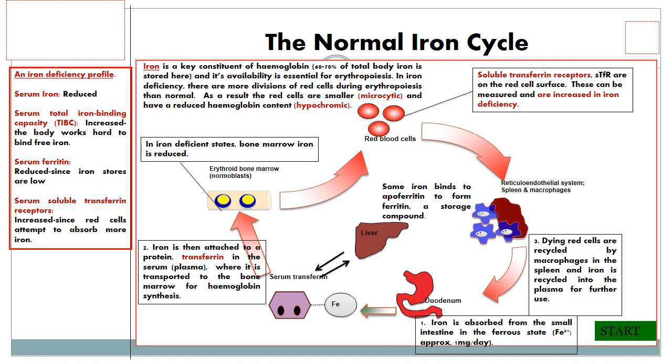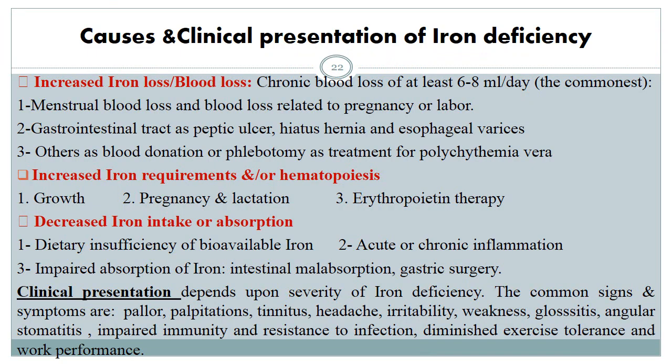In cases of iron deficiency anemia, the iron profile shows: reduced serum iron, increased total iron binding capacity, decreased serum ferritin, and increased serum soluble transferrin receptor. The most important cause of iron deficiency is increased iron loss or blood loss — chronic blood loss such as menstrual blood loss, blood loss related to pregnancy or labor, gastrointestinal tract problems (benign or malignant — peptic ulcer, hiatal hernia, or viral causes), frequent blood donation, or phlebotomy as in treatment of polycythemia vera.